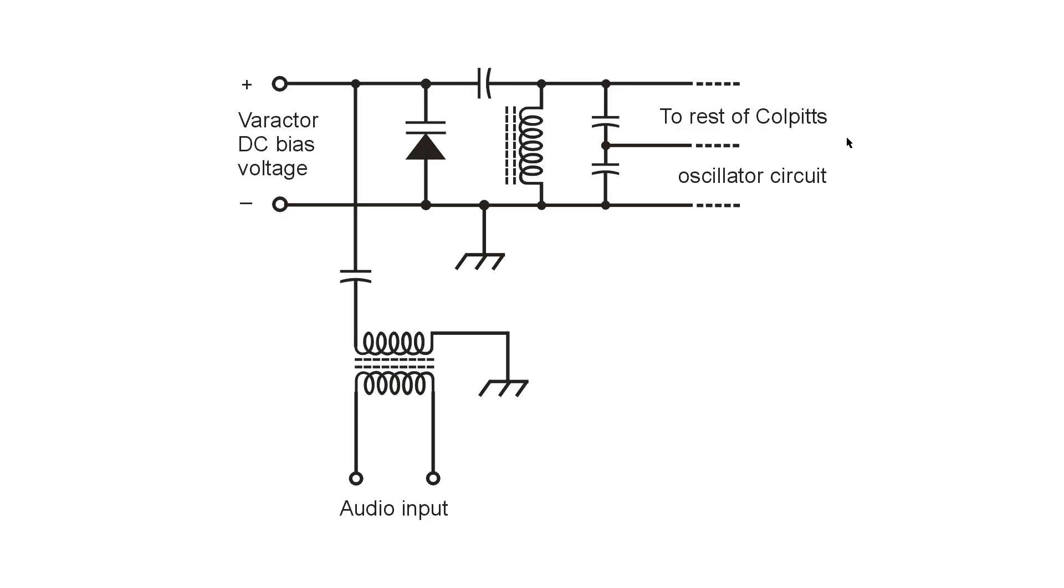which forms part of the Colpitts oscillator. And that capacitance changes right in step with the audio input signal, such as the yammering of a loon like myself, W1GV, ham radio call sign, into his microphone.